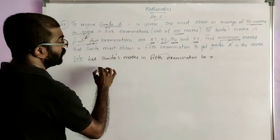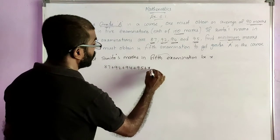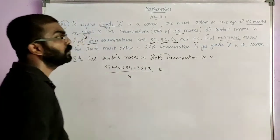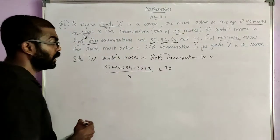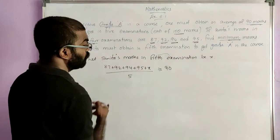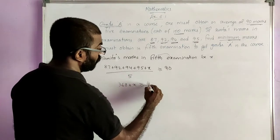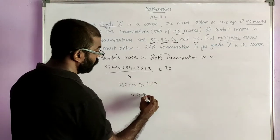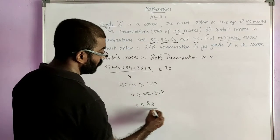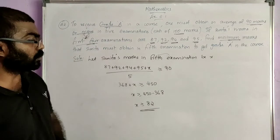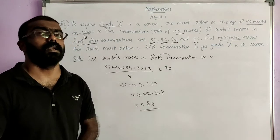Here we can take the marks in the 5th examination as X. Let Sunidha's marks in the 5th examination be X. We can write the average as 87 plus 92 plus 94 plus 95 plus X divided by 5, greater than or equal to 90. We get 368 plus X greater than or equal to 450. X is greater than or equal to 450 minus 368. X is greater than or equal to 82. So we can conclude: Sunidha must obtain 82 or more marks in the 5th examination to attain grade A in the course.